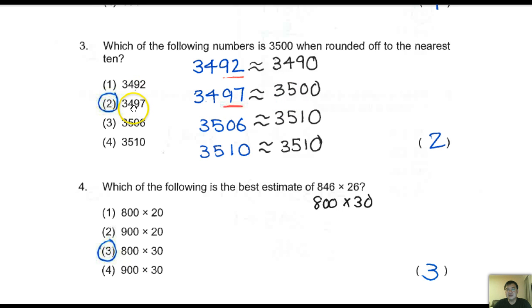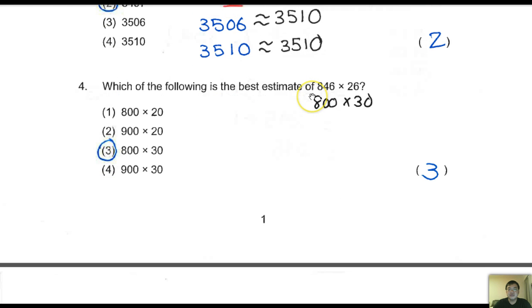Next, which of the following is the best estimate? The best estimate here: 846 - 84 is nearer to 80, so this 6 becomes zero. What is good for your mental mind of counting is easier to do it this way: 800 times 30. 267 is nearer to 30, so over here, 800 times 30.